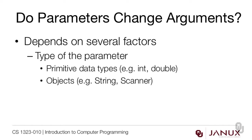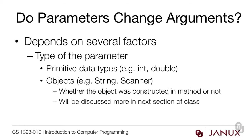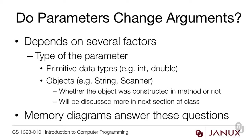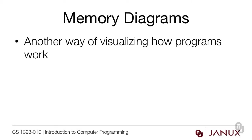Primitive data types, which is what we're looking at now — like int and double — work differently than objects like String and Scanner. The reason they work differently is because they're stored in memory differently. What's more, when we start talking about objects, it makes a difference where the object was constructed — whether it was constructed inside the method or not. We'll handle this in the next section of the class. Memory diagrams are a perfect way to answer these questions, and this is a good chance to see the advantages of learning this way of visualizing what's happening inside a computer.